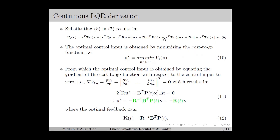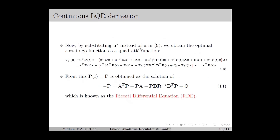By substituting u* into the cost-to-go equation, we obtain an expression for the optimal cost-to-go function as in equation 13. Substituting for u* and simplifying gives a final expression, and the optimal cost-to-go function will be quadratic, equal to x^T*p(t)*x. For this to hold, the term inside the brackets must equal zero, giving: A^T*p + p*A - p*B*R^{-1}*B^T*p + Q + p_dot = 0. From this, we obtain the final expression for the Riccati matrix p(t) as in equation 14, known as the Riccati Differential Equation (RDE). The RDE is a matrix differential equation which is difficult to solve analytically, so we usually go for the numerical solution.